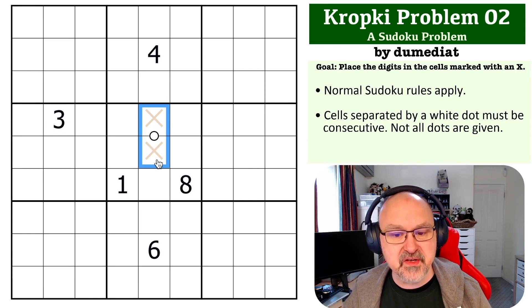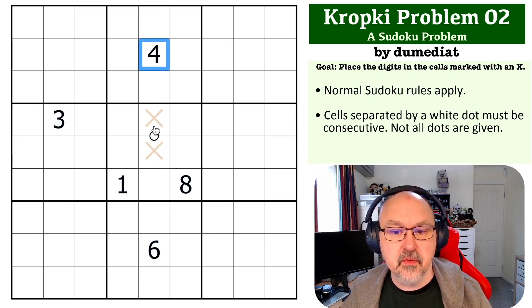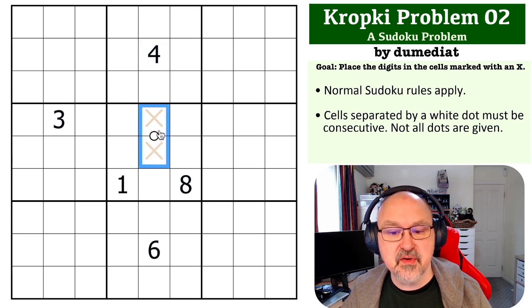You can't put one-two on this dot because you can't put a one on it. You could put two-three on this dot. You can't put three-four because there's no four. You can't put four-five because it sees a four. You can't put five-six because it sees a six. You can't put six-seven because it sees a six. You can't put seven-eight because it sees an eight. You can't put eight-nine because it sees an eight.